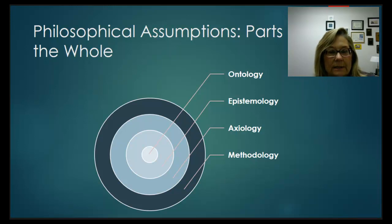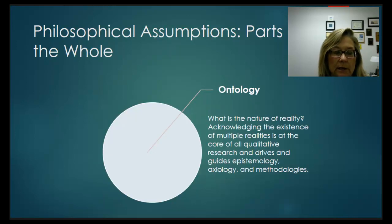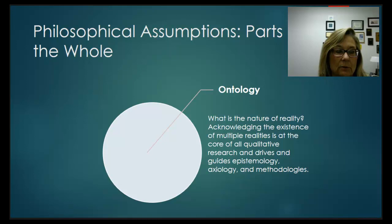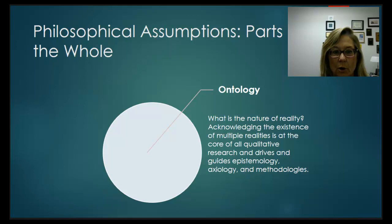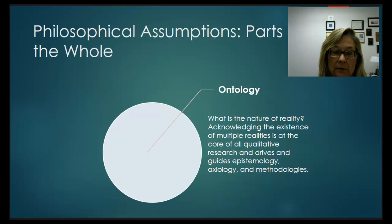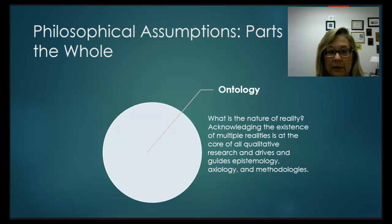We're going to take these apart one by one, look at the definitions, and see what part they play in the choices I'm making as a qualitative researcher. So let's look at ontology. What's the nature of reality? In qualitative research, we acknowledge that there are multiple realities. That acknowledgement forms the core, the root of all qualitative research. That notion of multiple realities, as opposed to one single existing reality, drives all the other things.